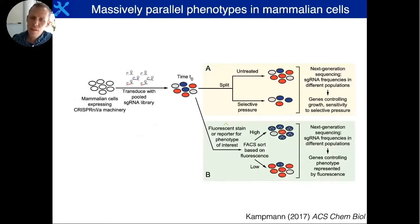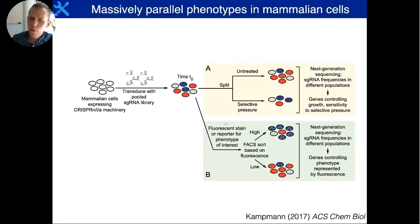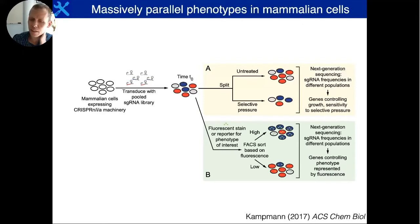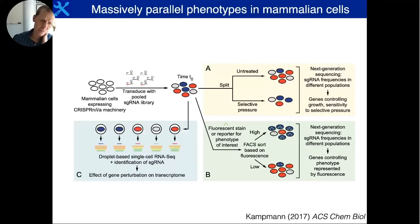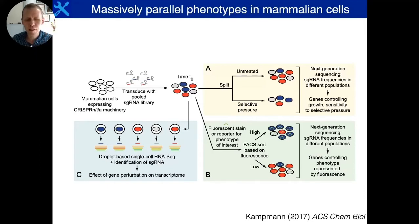We can go beyond survival-based phenotypes and couple CRISPR screening to fluorescent readouts — either constructing a fluorescent reporter for a phenotype of interest, adding a fluorescent antibody for a protein of interest, or even a phosphoprotein. We can use FACS sorting to separate out cells that have high or low levels of fluorescence and ask which genes modify that. More recently, we can also couple CRISPR perturbations to very high-dimensional readouts such as single-cell RNA sequencing. Using droplet-based sequencing, we can capture not only transcriptomes — getting a fingerprint for the cell state — but also guide RNA identities delivered at the same time to ask how perturbation of a gene affects cell state.